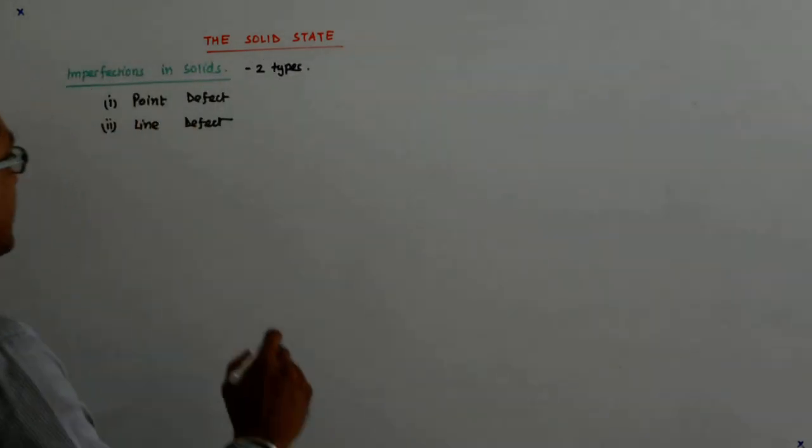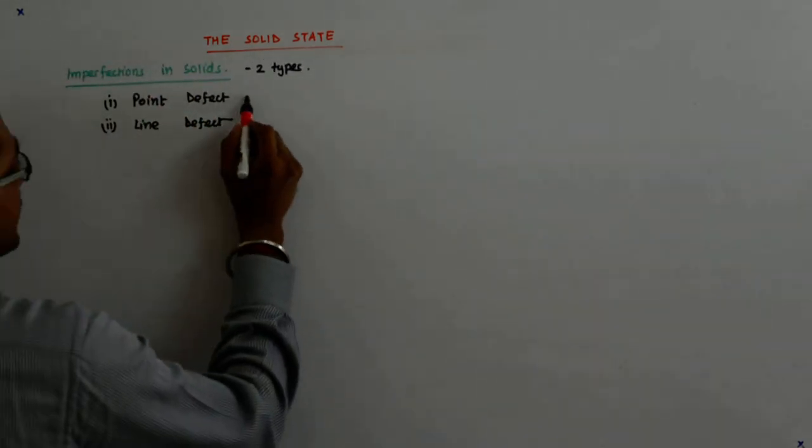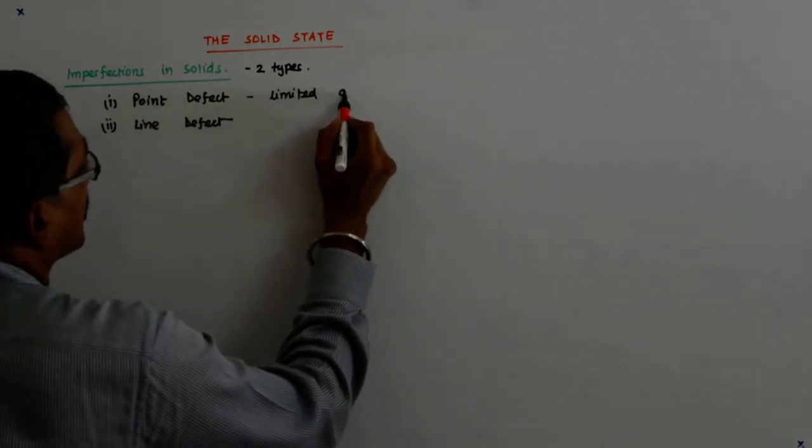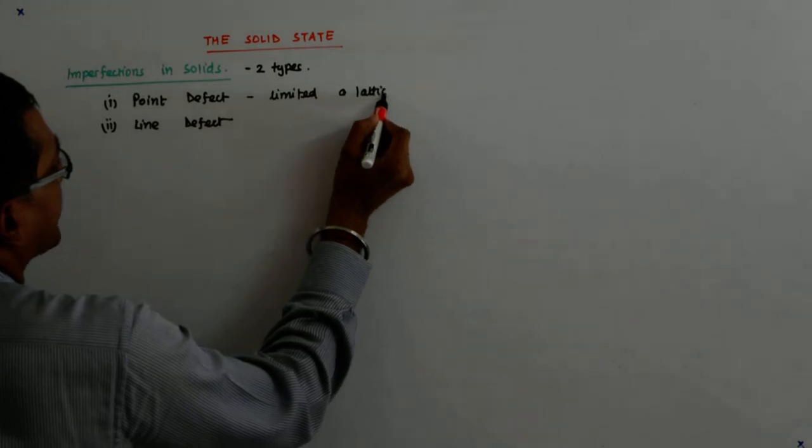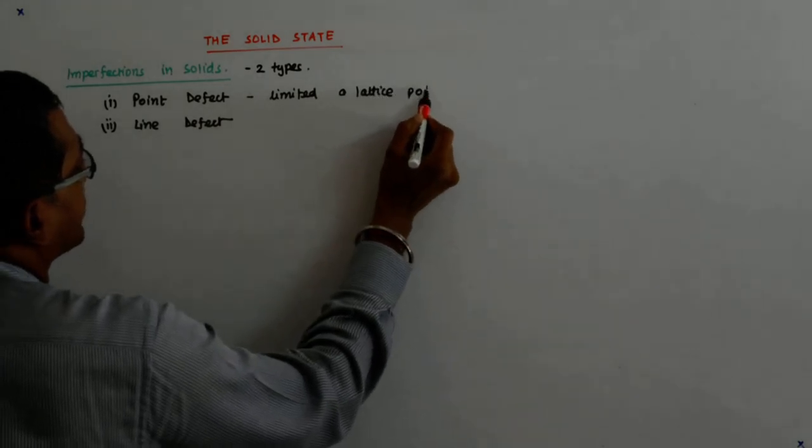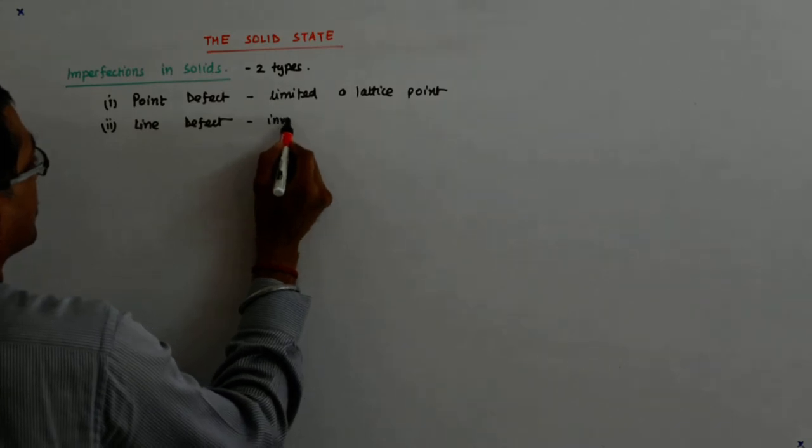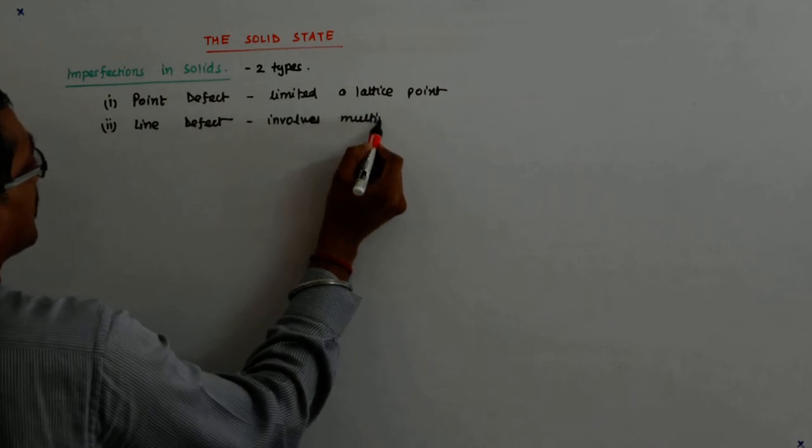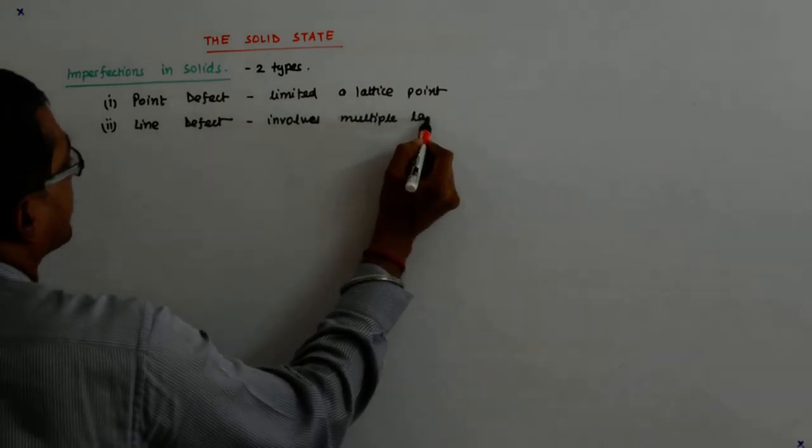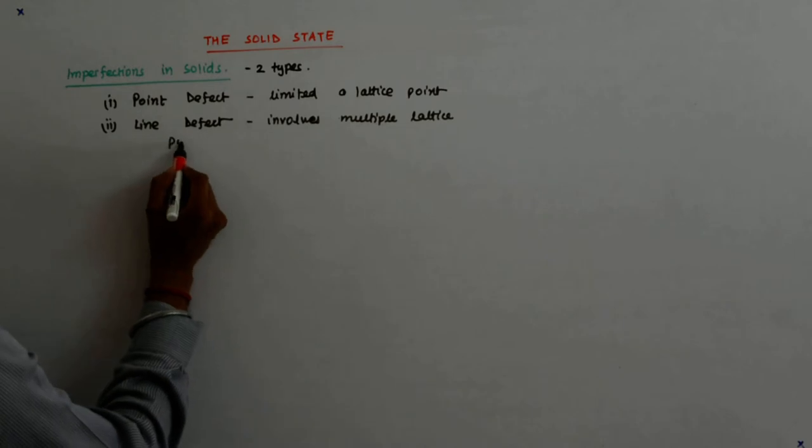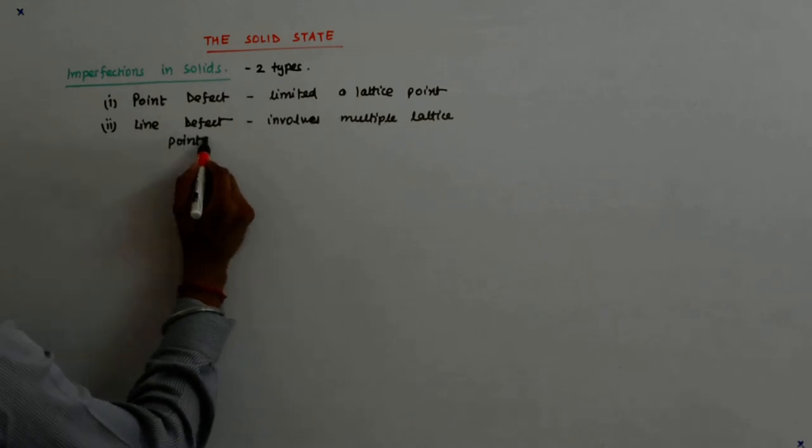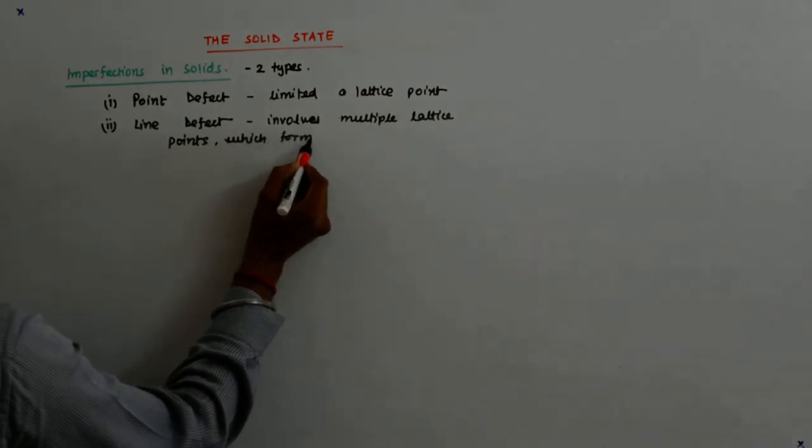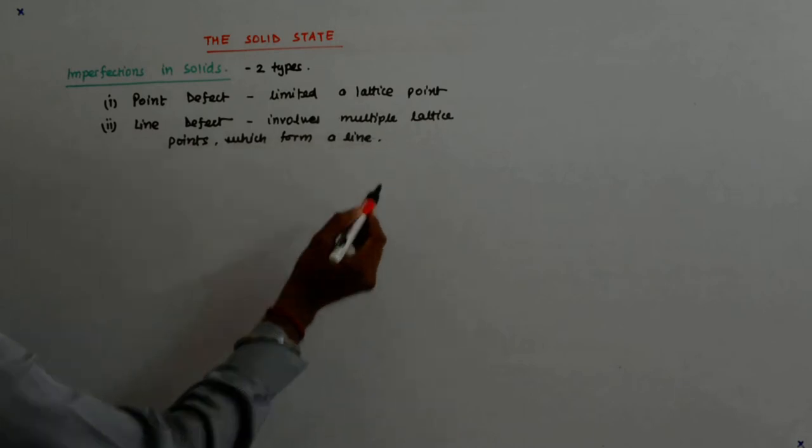The point defect tells us that this defect is limited to a lattice point, while the line defect involves multiple lattice points which form a line.